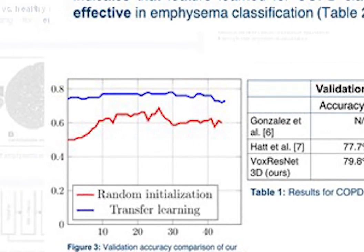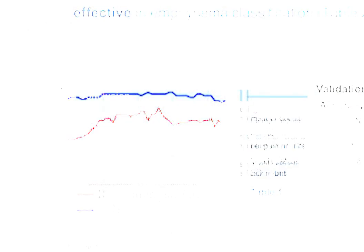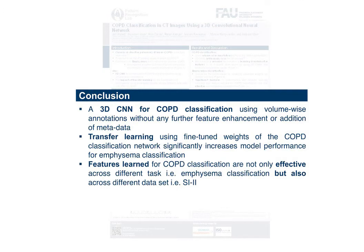We observed a significant increase in performance when we used transfer learning. This indicates that the features learned for COPD classification are also effective in emphysema classification. In conclusion, we were able to propose a 3D CNN for COPD classification and observe the effects of transfer learning using fine-tuned weights of the COPD classification for emphysema classification.